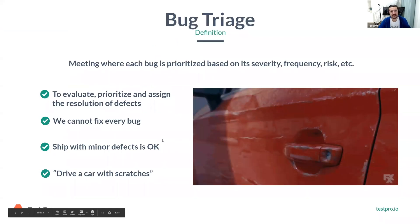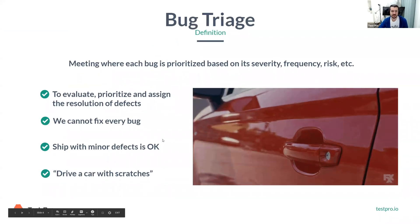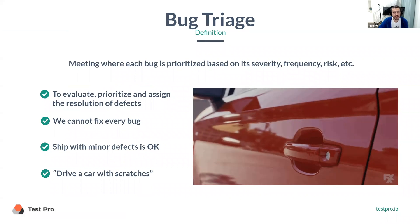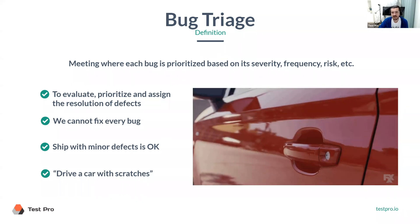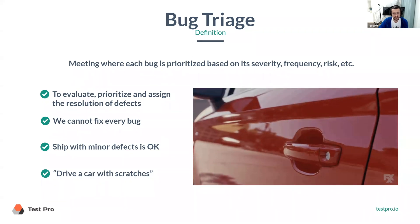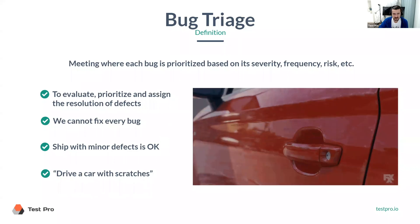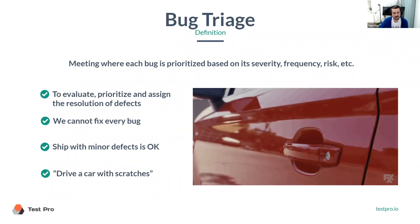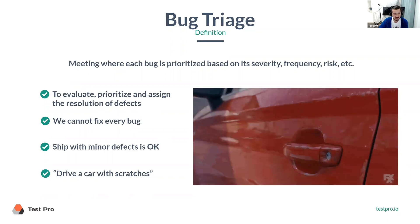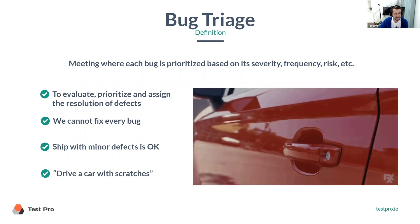Let's talk about bug triage. It's basically a meeting where each bug is prioritized based on its severity, frequency, risk, and so on. That's actually what we have right now — we all worked hard and logged a lot of defects. We logged 48 defects total, which is not bad at all. The problem is it can sometimes be not 48, but like 200 or 300 defects.